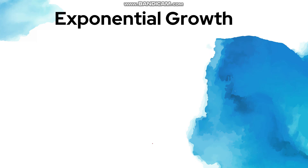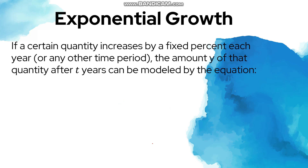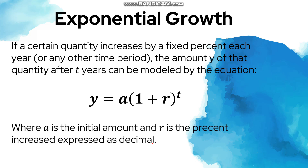If a certain quantity increases by a fixed percent each year or any other time period, the amount y of that quantity after t years can be modeled by y equals a times one plus r raised to t. Here, a is the initial amount and r is the percent increase expressed as a decimal — for example, if it increases by five percent, r equals 0.05. The variable t refers to the number of years.